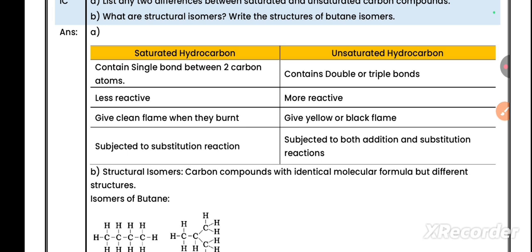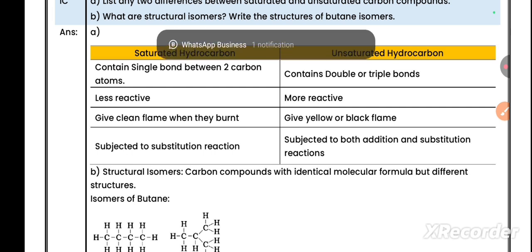Saturated hydrocarbons contain single bonds between two carbon atoms. Unsaturated hydrocarbons contain double or triple bonds. Saturated hydrocarbons are less reactive. Unsaturated hydrocarbons are more reactive. Saturated hydrocarbons give clean flame when burnt. Unsaturated hydrocarbons give yellow or black flame. Saturated hydrocarbons undergo substitution reaction. Unsaturated hydrocarbons undergo both addition and substitution reactions.